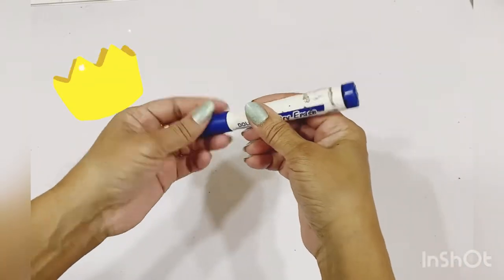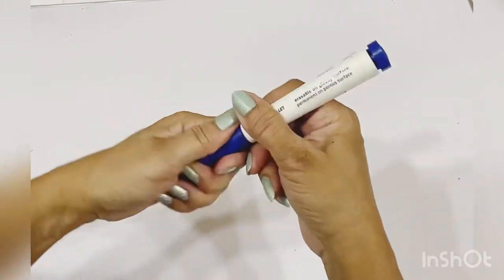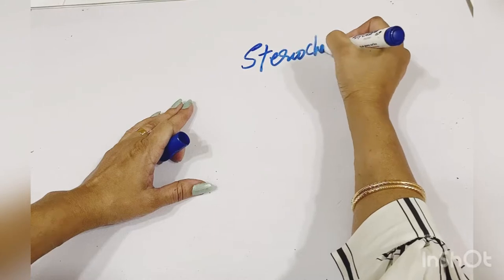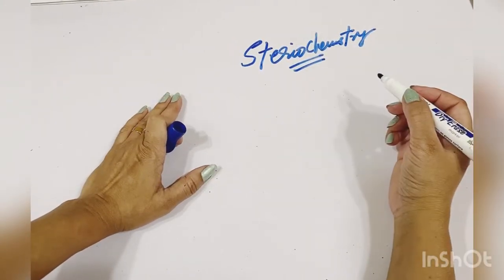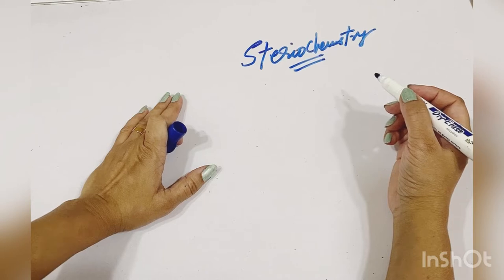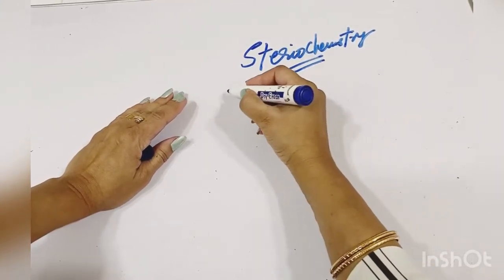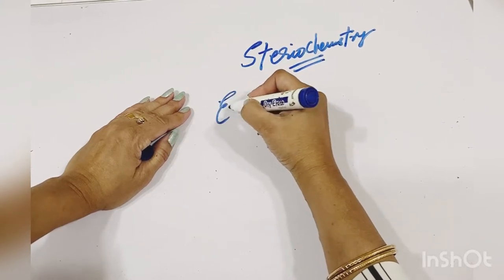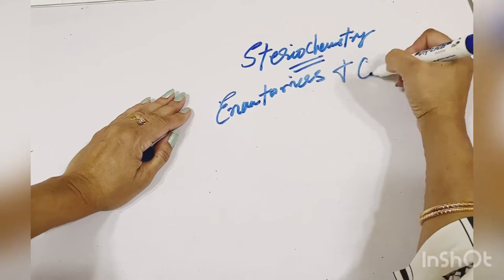Hello and welcome. Today our topic is very interesting — it's something to do with stereochemistry. I'm your professor Dr. Moeen Akhtar Mughal from the Dr. Mekazi Institute of Chemistry, University of San Jamshiru. Today's main topics that we are going to focus on are enantiomers and chirality.